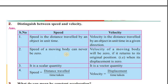The speed of a moving body can never be zero. But the velocity of a moving body can be zero — when the object returns to its original position and its displacement is zero.